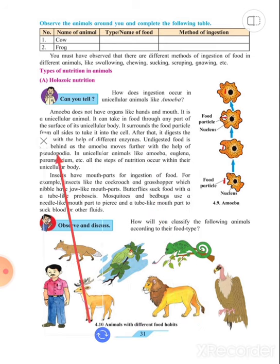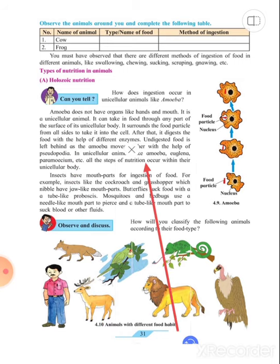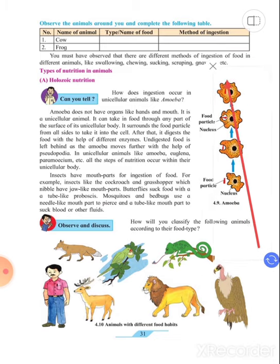Undigested food is left behind as the amoeba moves further with the help of pseudopodia. In the similar way, it left behind that particle with the help of pseudopodia. It leaves the food particle behind and moves forward.